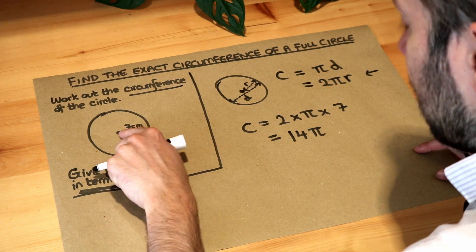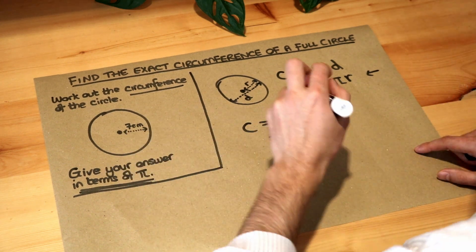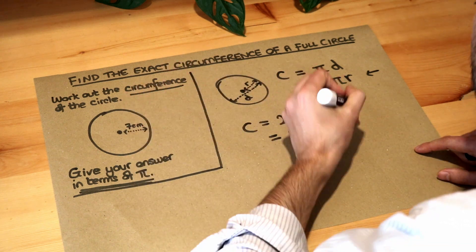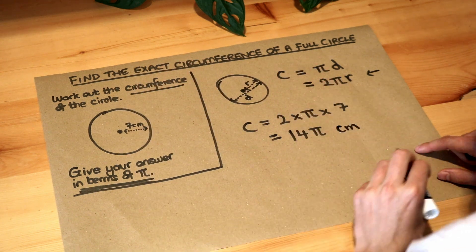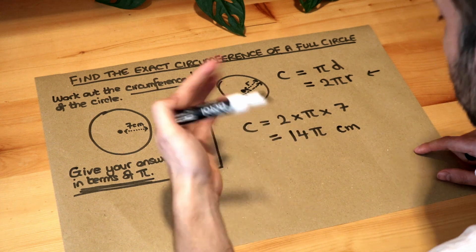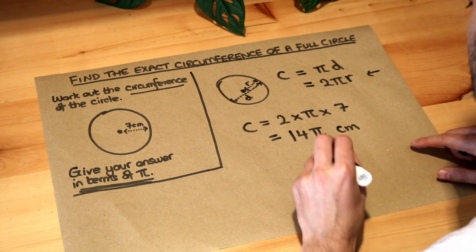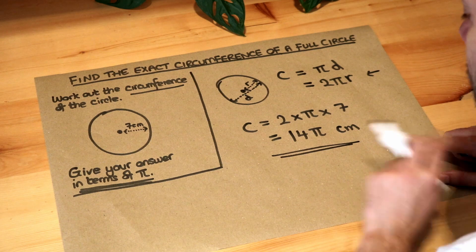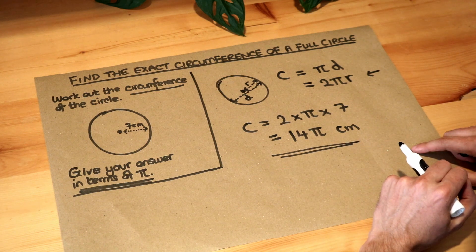The radius is in centimetres, we need to put a unit on the circumference. Circumference is still a length, so it's still going to be centimetres, the unit here. If it was an area, we'd use centimetres squared instead, which we'll look at in another video. So that is the final answer. The answer is 14 pi centimetres.